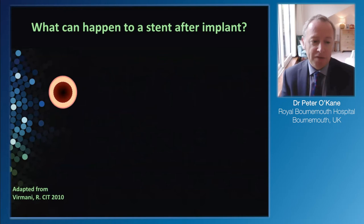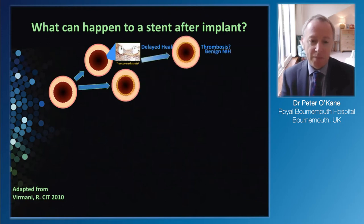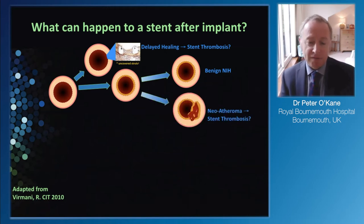When we put a stent in, we hope for a nice cylindrical stent optimally applied to the vessel wall. With first generation stents, we sometimes found they didn't heal so well, leading in some cases to stent thrombosis - this uncovered strut phenomenon. With contemporary stents, we get a nice thin layer of tissue inside the stent on the luminal surface, coating and protecting the metal against blood so we don't get stent thrombosis, but also not encroaching too much on the lumen. Coronary disease is progressive and in some cases near-atherosclerosis can develop, even within drug-eluting stents.